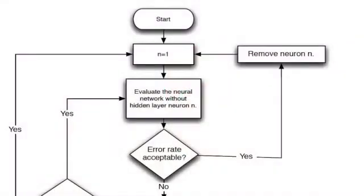We will begin by looking at how we implement the selective pruning algorithm. Here you see the top part of the selective neural network pruning algorithm. We start. We set n equal to 1. N is equal to the neuron that we are considering removing. We evaluate the neural network without the hidden layer neuron n.